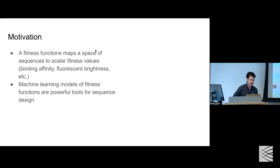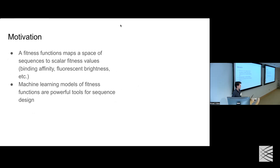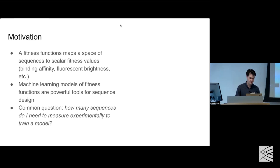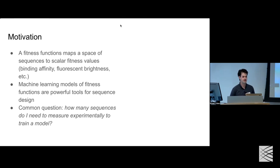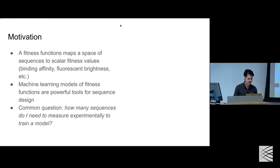Machine learning models have become a powerful tool for designing protein sequences: you train a model and use it to search sequence space for proteins with improved function. A key practical question that came up repeatedly was: how many sequences do I need to measure experimentally to learn the fitness function? This question arose both from the experimentalist perspective and from the ML perspective, and the speaker generally didn't have an answer.